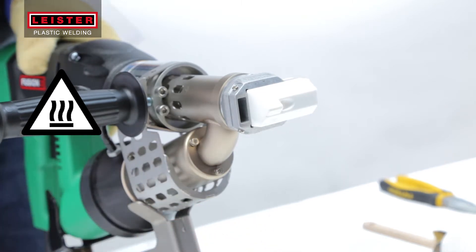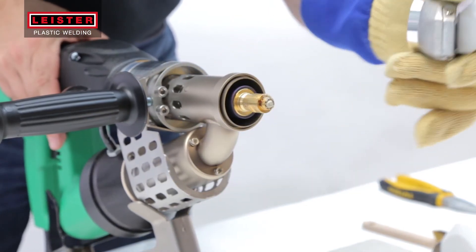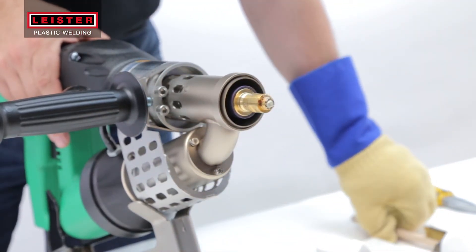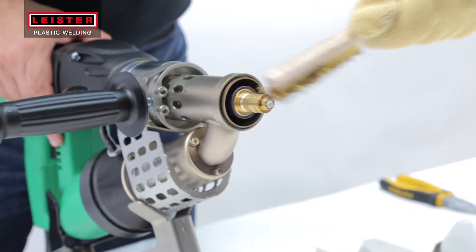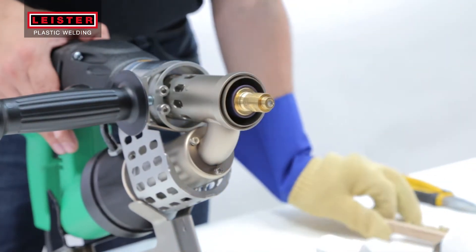When changing a welding shoe or if your welding work is finished, clean as much plastic as possible from the welding shoe prior to cool down. A brass brush works great for this and it's also gentle on the parts being cleaned.